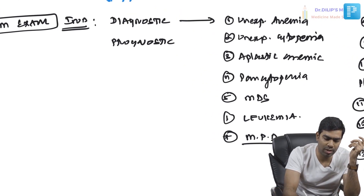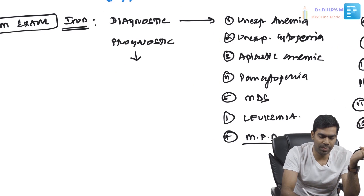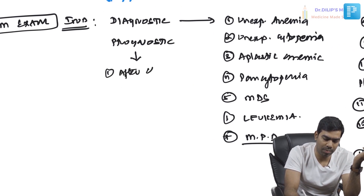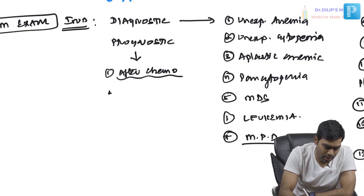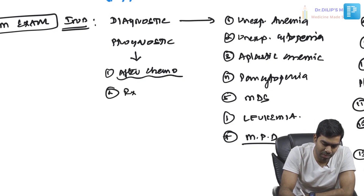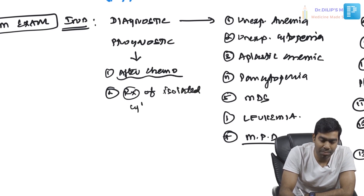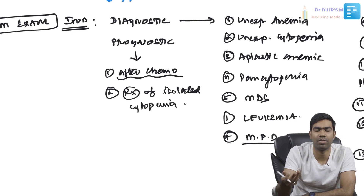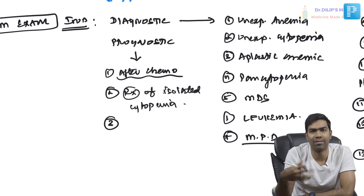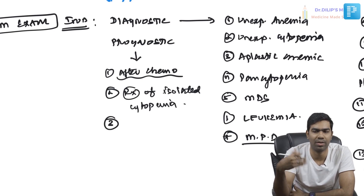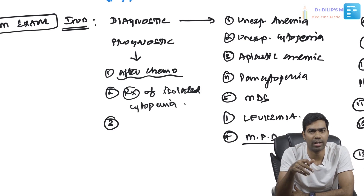If somebody asks about prognostic reasons for bone marrow examination: typically after chemotherapy, especially in a leukemia patient, you can see the cellularity once again and confirm whether the chemotherapy is working or not. For prognostic and follow-up reasons you can do a bone marrow. Another indication is after treatment of an isolated cytopenia — you can do a bone marrow to confirm progression of the lineages, whether they are proliferating after treatment.